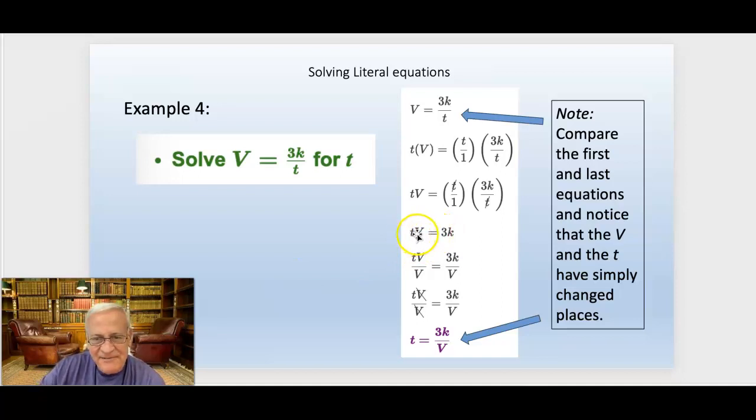So this side here is TV equals 3K. But we want the T by itself. So divide out the V. Divide both sides by V to get rid of the V. So the V now disappears from the left side and shows up on the right side underneath. It's as if, look at the beginning here, I took the V right here and just moved it underneath on the other side. Just moved it underneath.